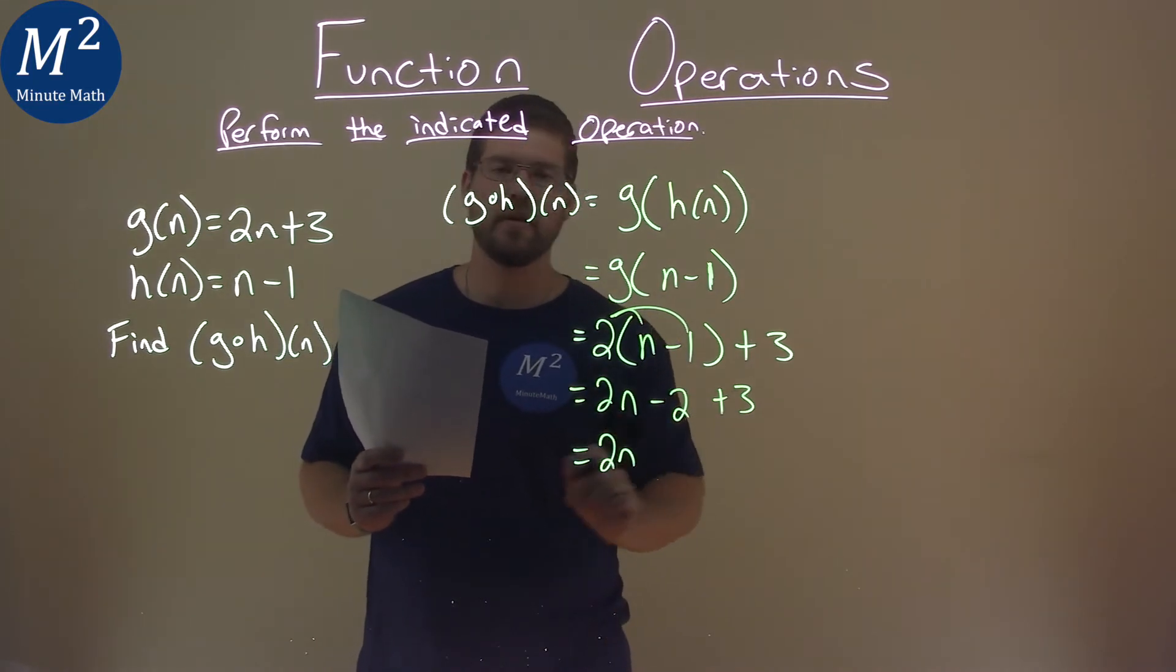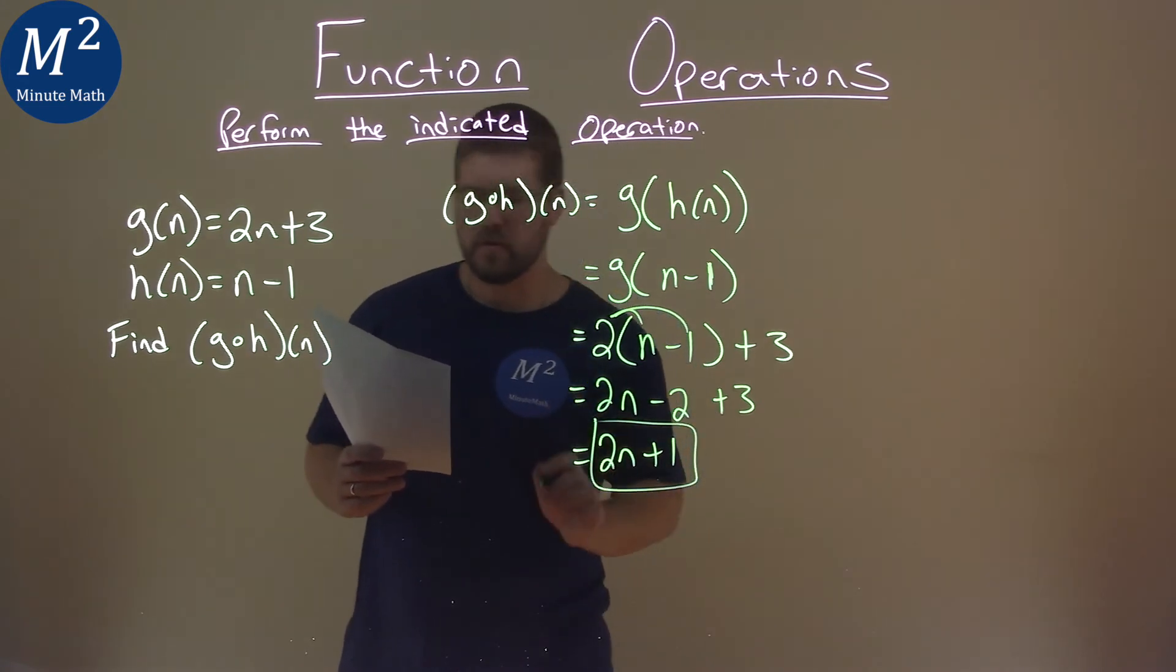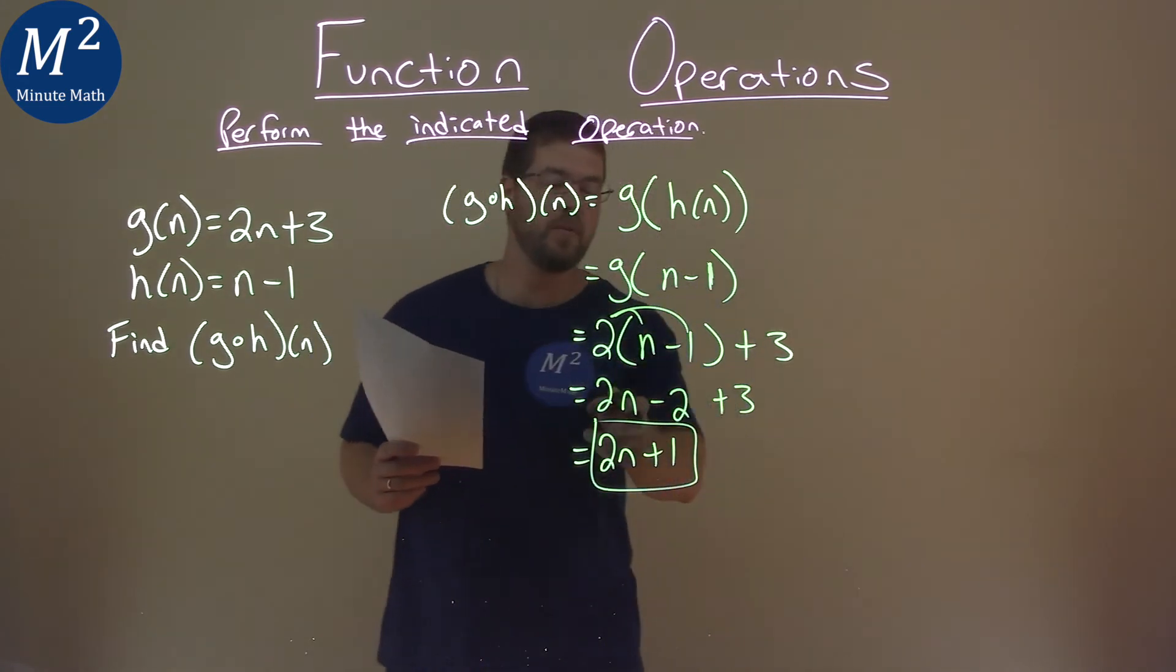Well, 2n here, combine like terms. Negative 2 plus 3 is positive 1, and so my final answer here is just 2n plus 1.